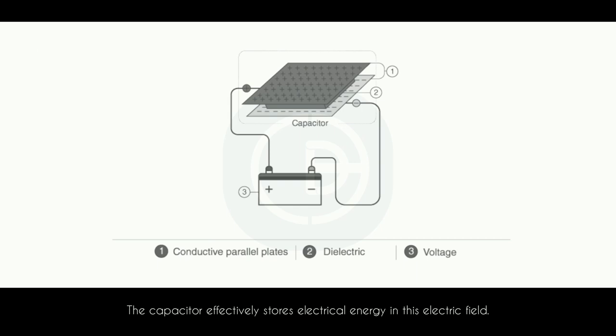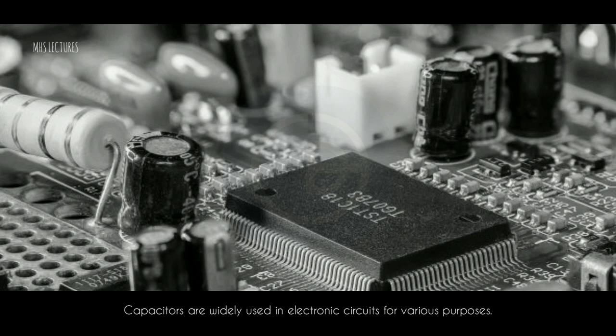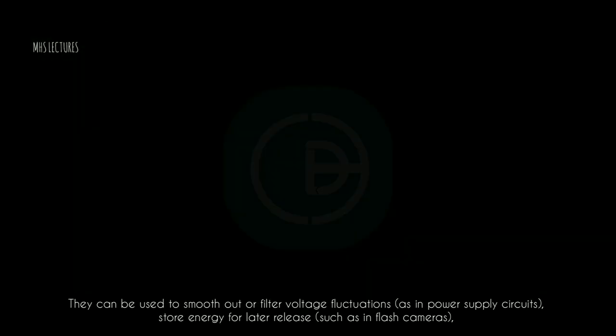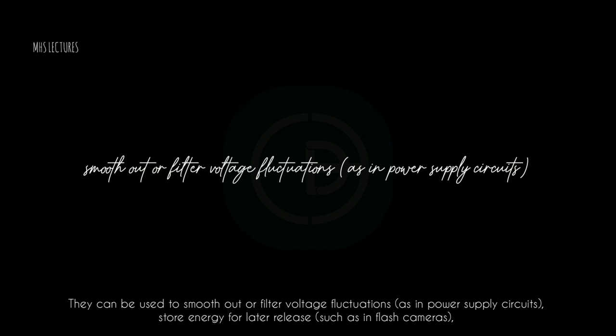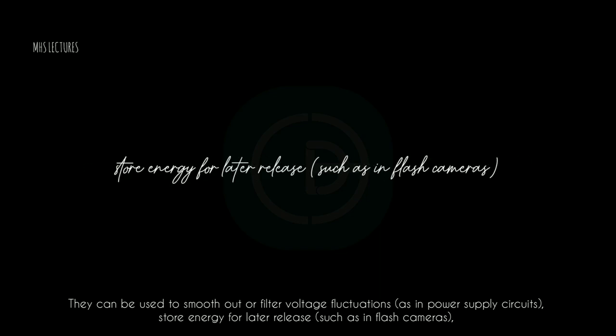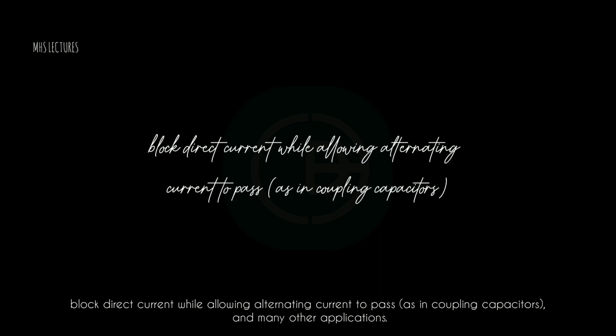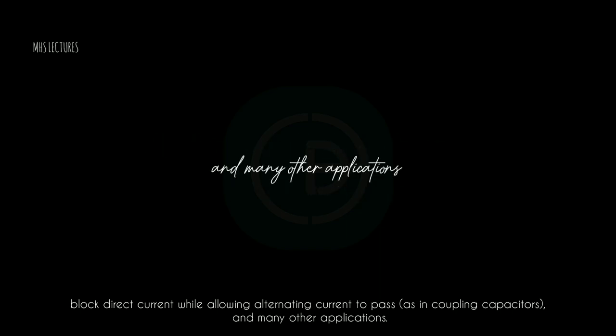The capacitor effectively stores electrical energy in this electric field. Capacitors are widely used in electronic circuits for various purposes. They can be used to smooth out or filter voltage fluctuations, as in power supply circuits, store energy for later release, such as in flash cameras, block direct current while allowing alternating current to pass, as in coupling capacitors, and many other applications.